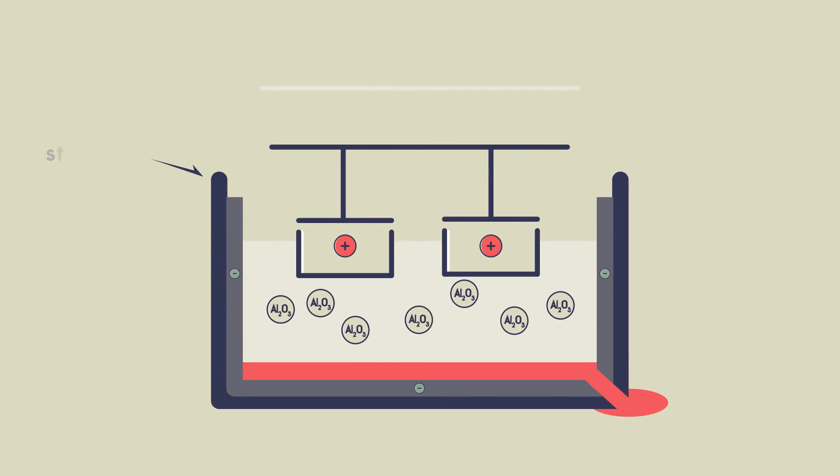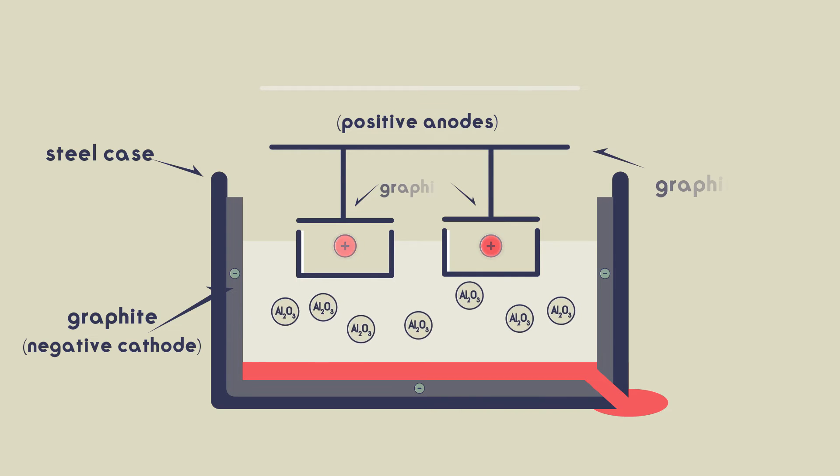The steel case is coated with graphite, providing the negative cathode. The positive anodes are immersed in the molten cryolite and are also made of graphite. Remember that graphite is a form of carbon.